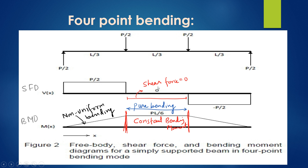The shear force in the mid span L by 3 is 0. In the bending moment diagram, the bending moment is constant where the shear force is 0 — constant at this mid span of L by 3. At the left and right sides, the bending moment is not constant; it is a non-uniform, linearly varying bending moment. Pure bending occurs when there is constant bending moment and zero shear force.